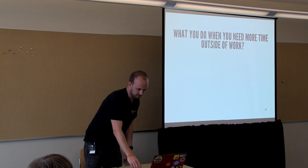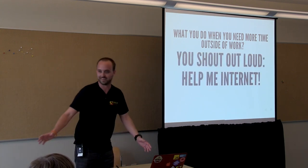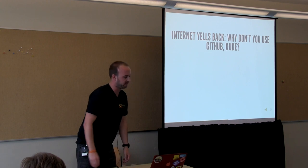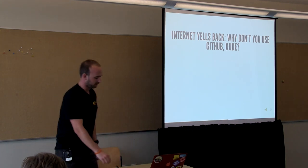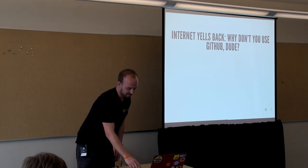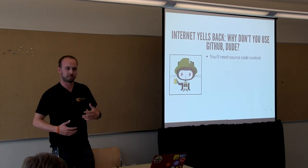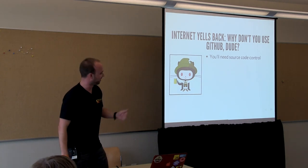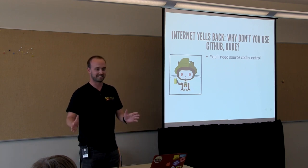So what do you do when you need more time? You ask the internet. Help me, Internet, with my open source project. And the internet yells back: you're working on an open source project, why don't you use GitHub? GitHub has figured out how to make coding social — kind of put a built-in workflow on it. I know the Oktoberfest Octocat is pretty cool — they call it Oktobercat.